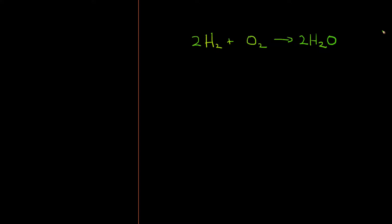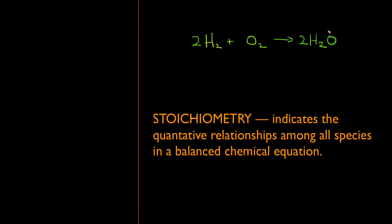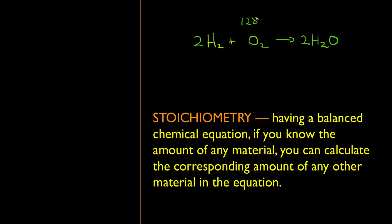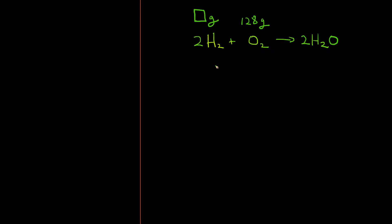This video provides an introduction into stoichiometric calculations, arguably the most difficult subject matter of the course. The idea is actually quite straightforward: take a balanced chemical equation that has the proper stoichiometry and make calculations such as this. Let's say we have 128 grams of oxygen and we want to know how many grams of hydrogen we need to react with that. That type of calculation is called a stoichiometric calculation.